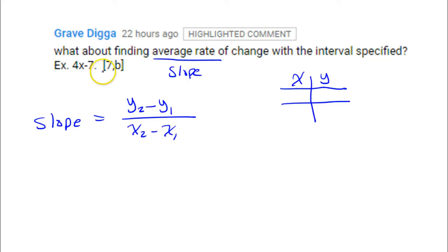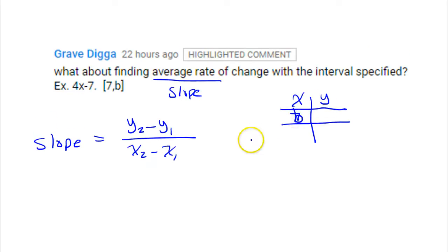So when you're given an interval, you are given x values. So we're being given x values of 7 and b. We're given x values of 7 and b. So we need to find the y values that go with those x values.